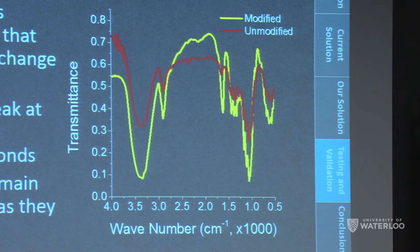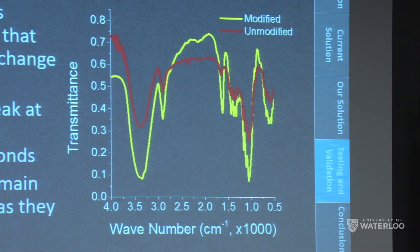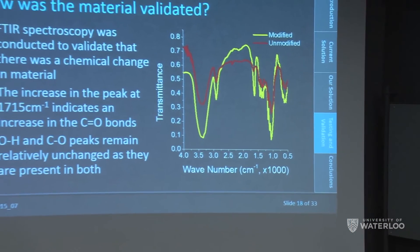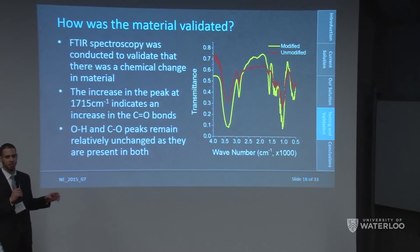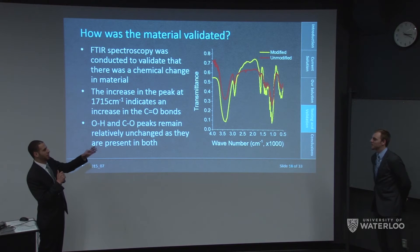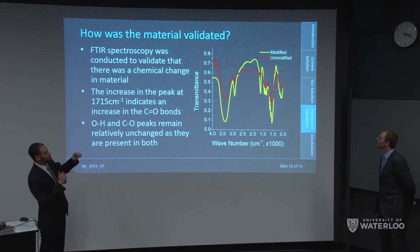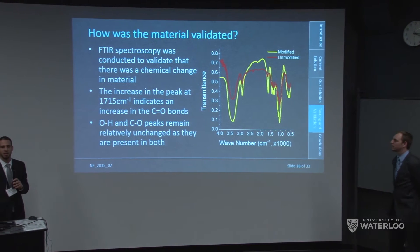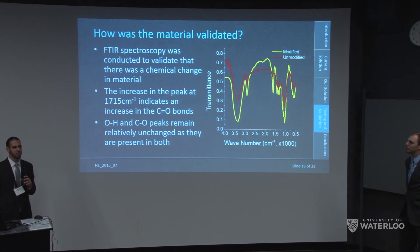We then confirmed that the reaction completed its intended functionalization using Fourier transform infrared spectroscopy (FTIR). We looked for a peak present in the modified material that was not present in the unmodified material — specifically the C=O peak, present at approximately 1715 wavenumbers. There is a clear change at that peak, confirming that the carboxylation of the material was indeed successful.